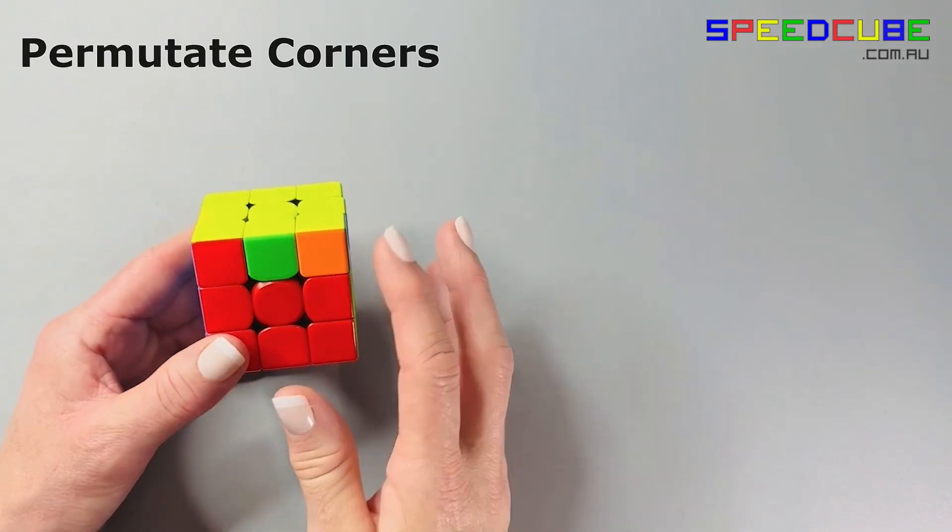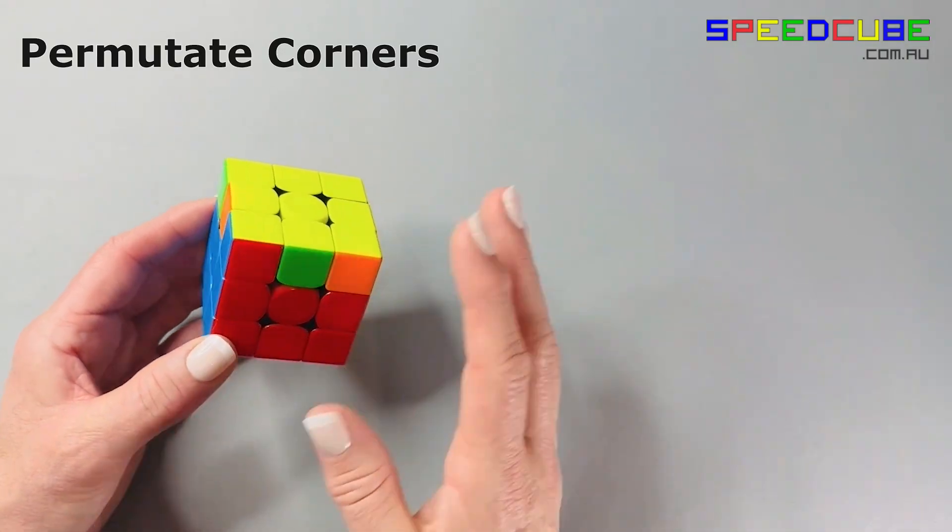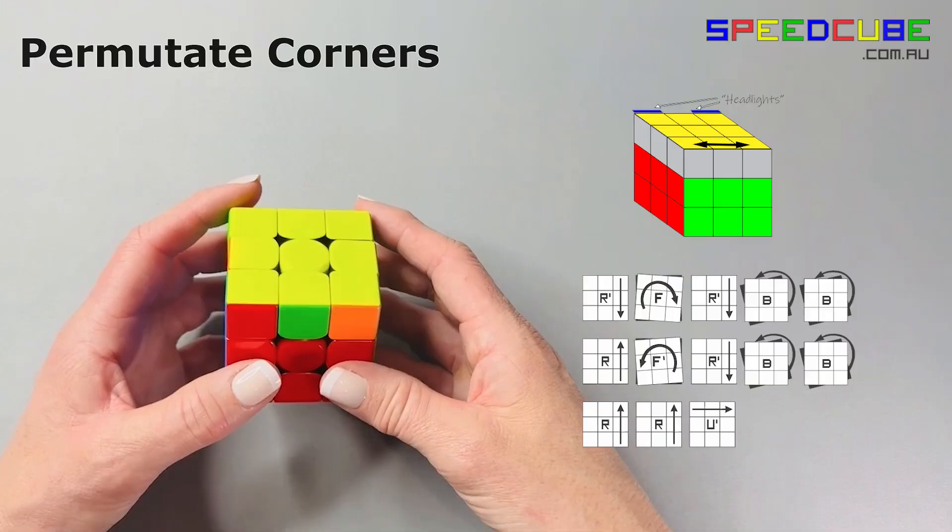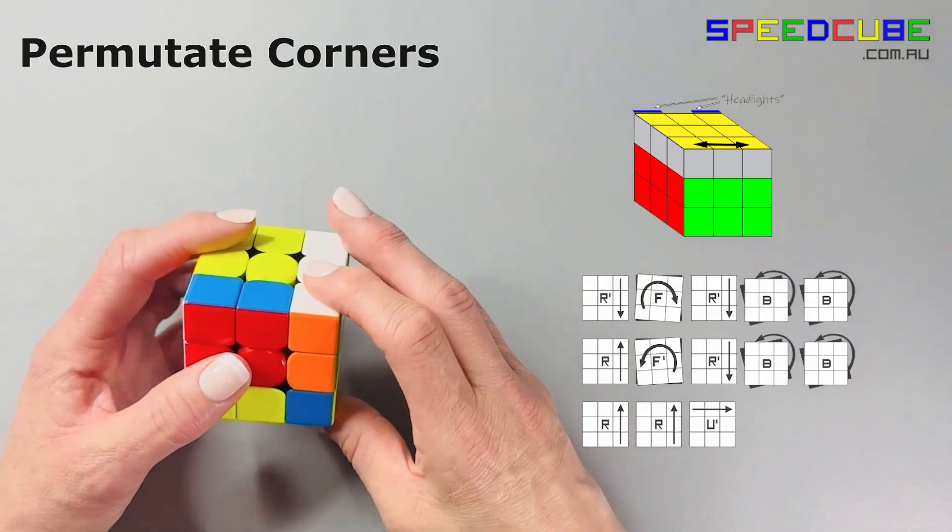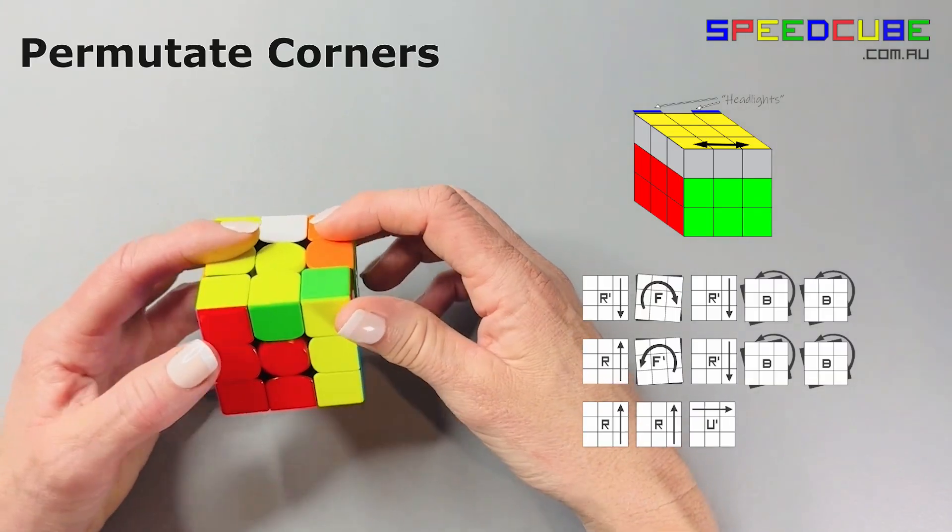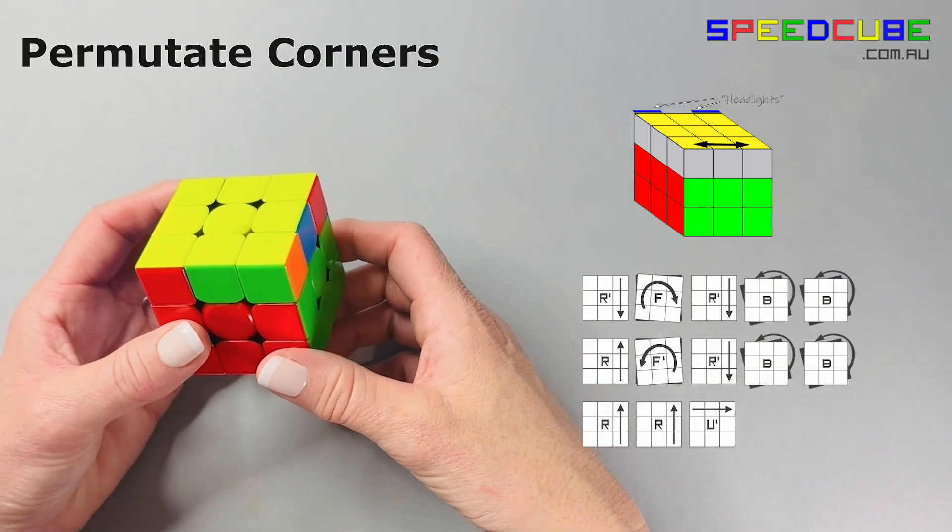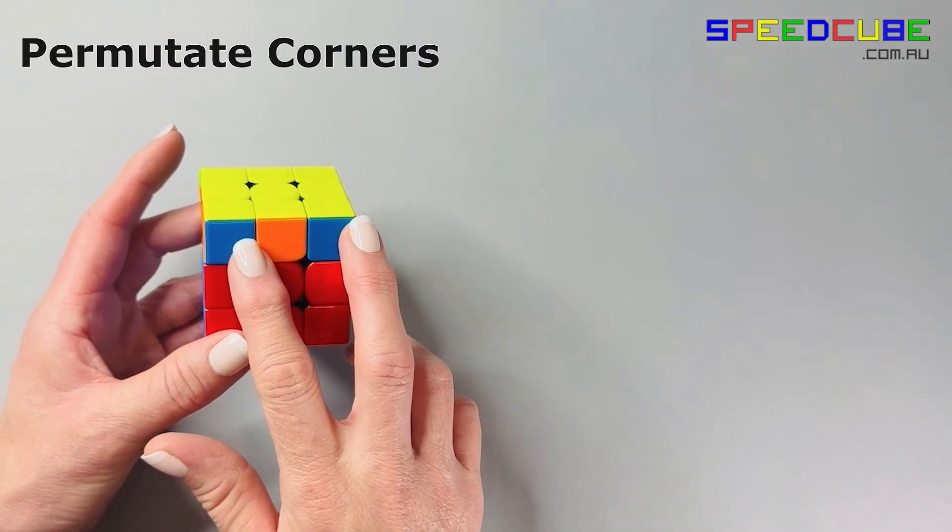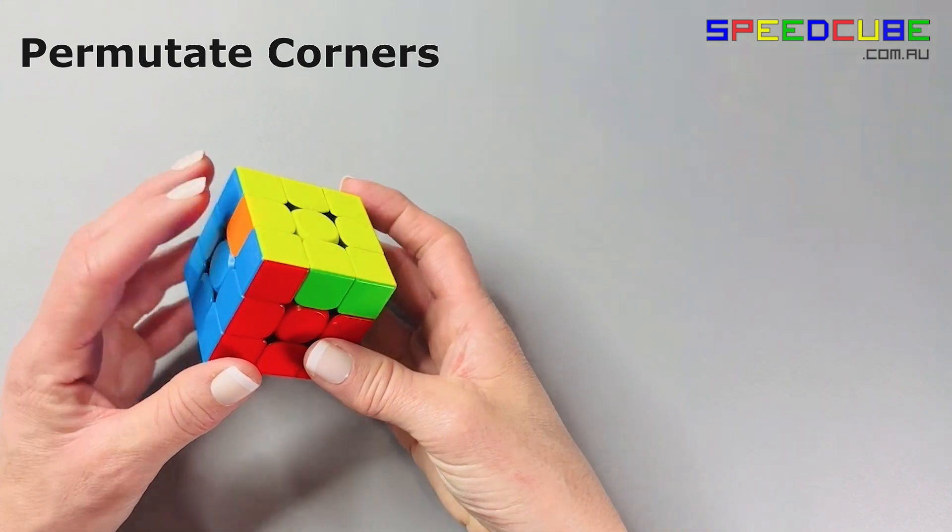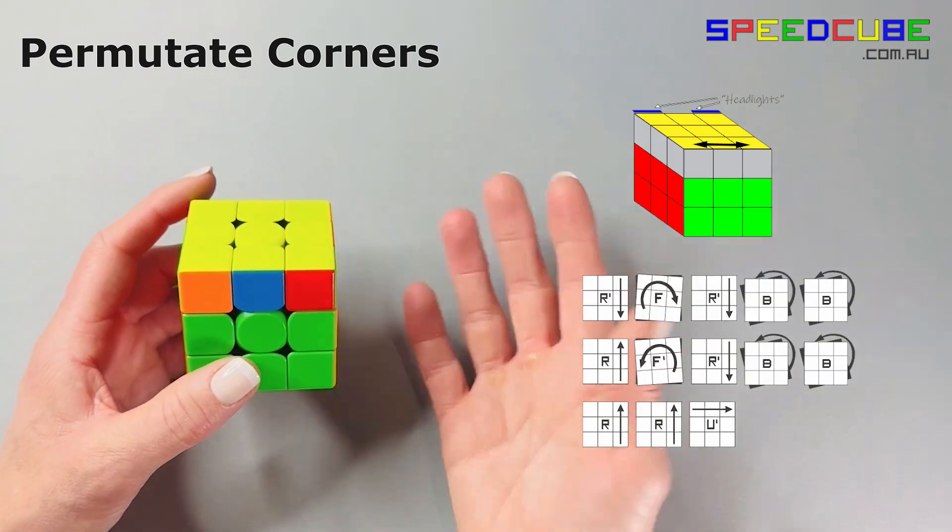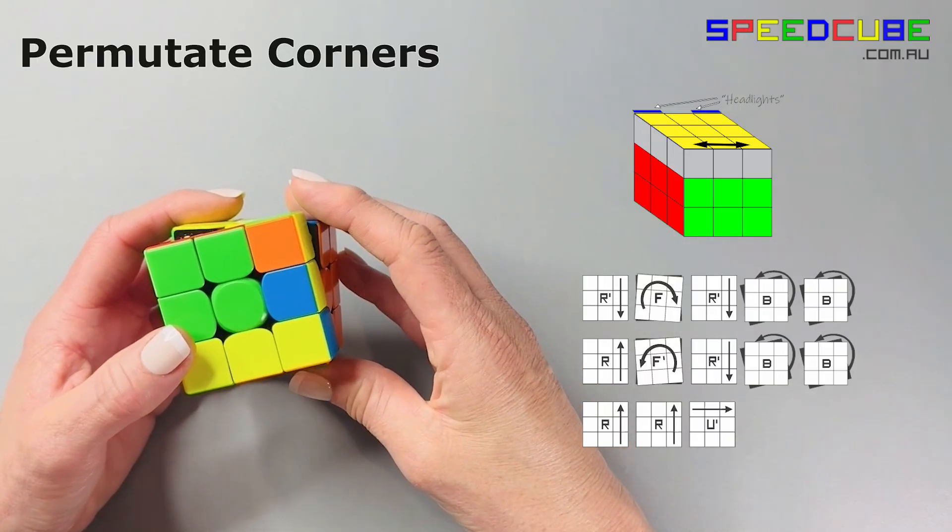If you have no matching corners, then hold your cube with any side facing you and perform the same steps again. That will give you two matching corners. Again, hold your cube with those corners at the back and perform the steps to swap the two front corners.